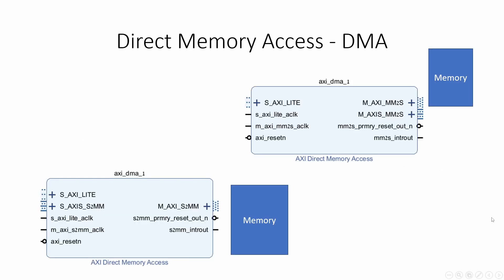Xilinx DMA is actually two DMAs: a write and a read. The write DMA is actually a slave — it has to be configured before the data stream starts.